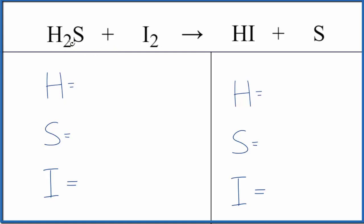Let's balance the equation. Two hydrogen atoms, one sulfur, and two iodine atoms. Product side. One hydrogen, one iodine, and one sulfur.